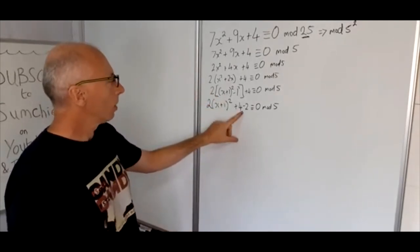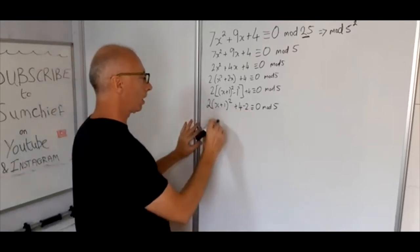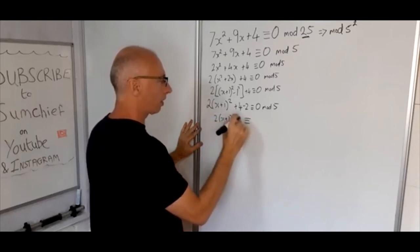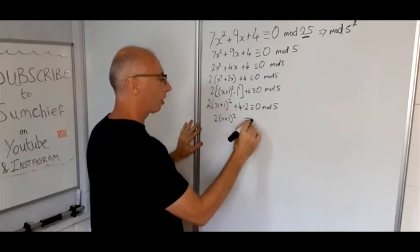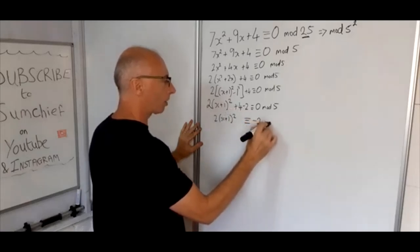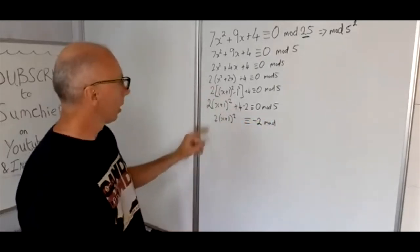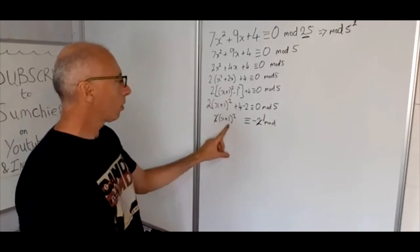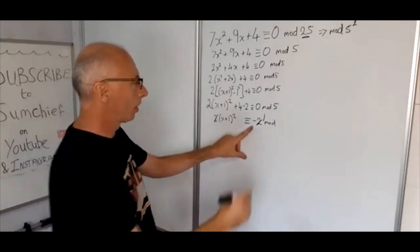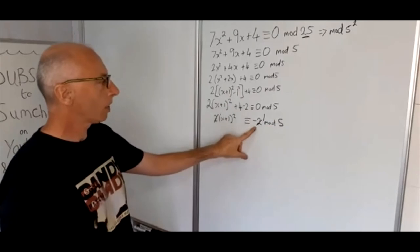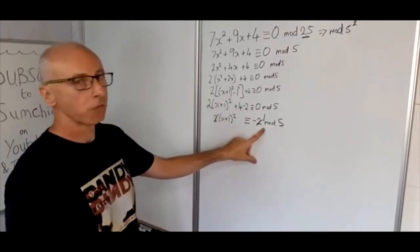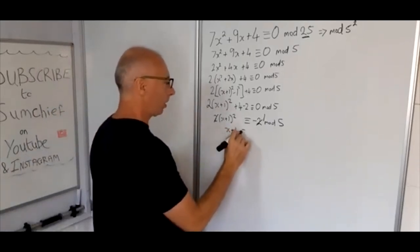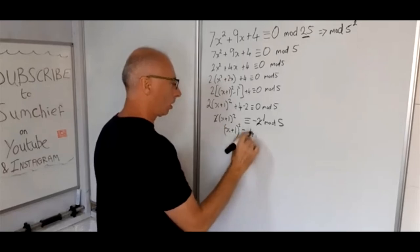So let's bring this plus 4 minus 2 onto the other side. So 2(x plus 1) squared is now congruent with minus 2. We can just cancel out these 2's now. So (x plus 1) squared is congruent with minus 1 mod 5. Now minus 1 mod 5 we know is 4 and that's really handy because 4 is a perfect square.